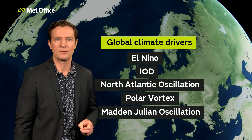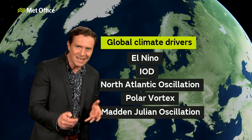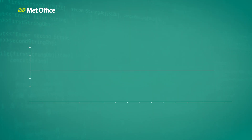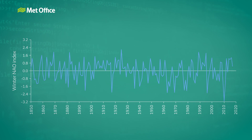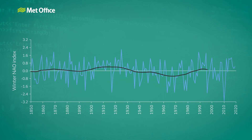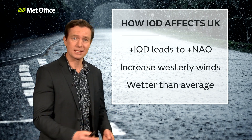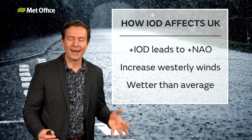Does the IOD affect UK weather? Well, the Indian Ocean Dipole is just one of many global climate features that affect our weather here in the UK, and we call these our climate drivers. The teleconnections between them are a really active area of ongoing scientific research. One connection suggests that a positive IOD can lead to a positive North Atlantic Oscillation in late winter. The North Atlantic Oscillation, or NAO, determines how much influence the Atlantic has on our weather. When the NAO is positive, westerly winds are more likely across the UK, and the weather is generally wetter and windier with a more active jet stream.